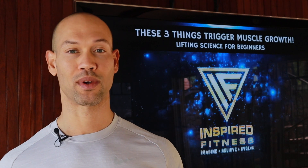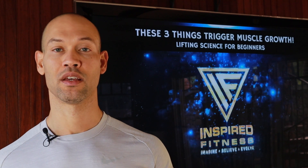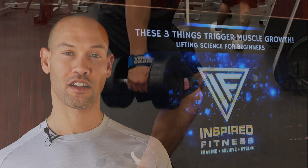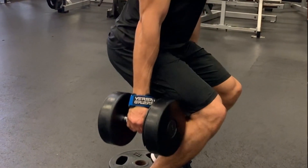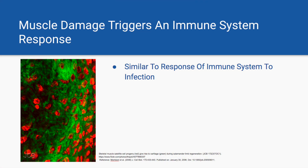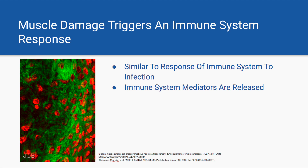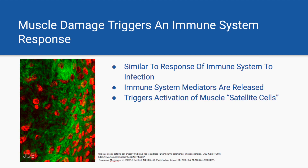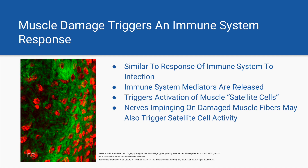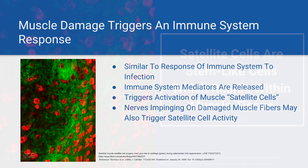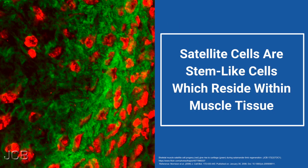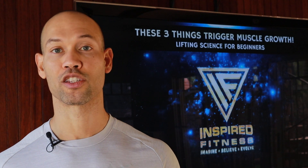Muscle damage can be thought of both separately from and related to muscular tension. As you execute resistance training exercises, the physical trauma or physical damage to varying degrees triggers a response from your immune system that is actually somewhat similar to the immune response to an infection. The triggering of your immune system results in the release of various immune mediators and growth factors. It's been noted that this immune response is able to trigger what are called satellite cells within skeletal muscle, and there is some evidence that actual nerve activity in the region of damaged muscle tissue can also activate satellite cells. Satellite cells are stem-like cells that reside within muscle tissue and play a very important role in not only repair of muscle cells but also in growth by hypertrophy.